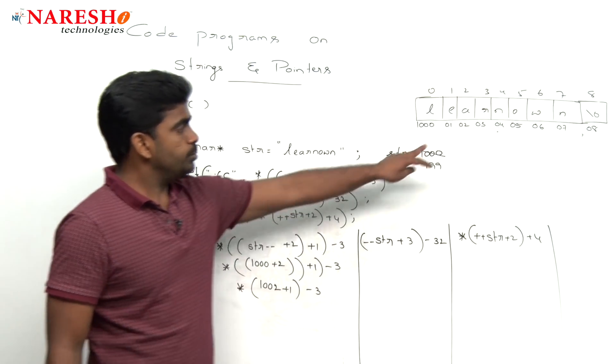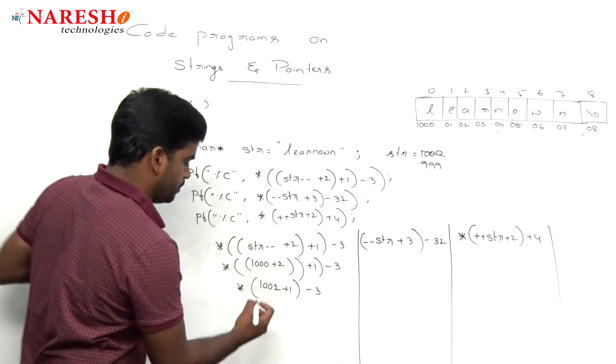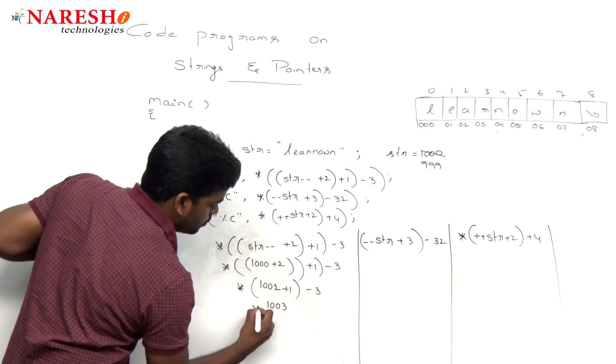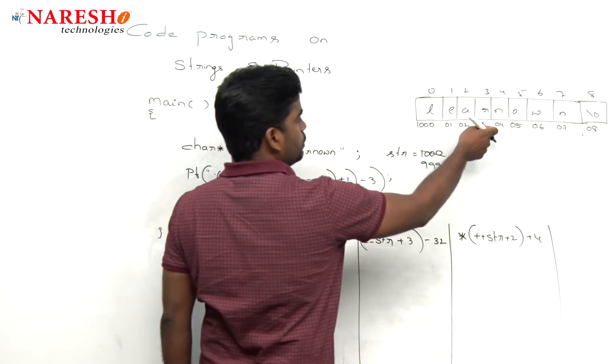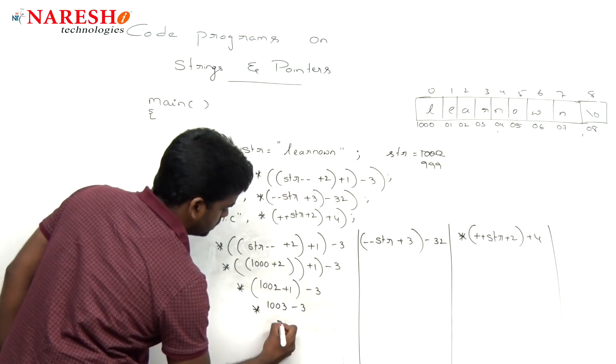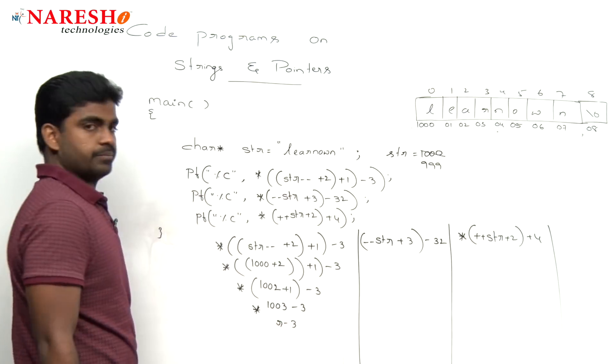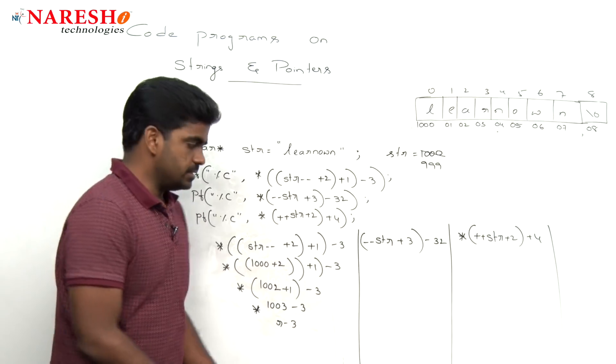Here it is 1002 plus 1 is what, 1003. Pointer to 1003 minus 3. What is that pointer to 1003? It's r. So what is that r minus 3?